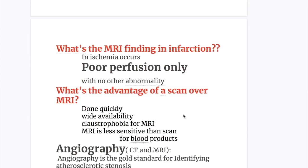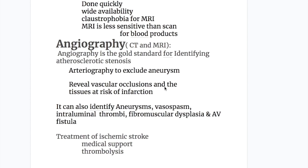In ischemia, poor perfusion occurs with no other abnormalities seen on MRI. The advantage of CT scan over MRI is that it is done quickly, has wide availability, patients with claustrophobia cannot use MRI, and MRI is less sensitive than CT for blood products. Angiography is the gold standard for identifying atherosclerotic stenosis; it excludes aneurysms, reveals vascular occlusions, identifies vasospasm, intraluminal thrombi, fibromuscular dysplasia, and AV fistula.